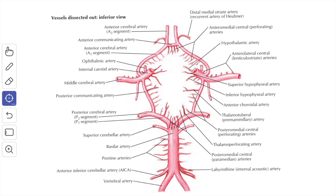The branches from the circle of Willis form the central branches — numerous, slender, thin-walled perforating branches which supply the centrally located parts of the cerebrum, namely the corpus striatum, internal capsule, etc. These are end arteries. The central arteries arise in the region of the circle of Willis and are arranged into four groups. The anteromedial group arises from the anterior communicating artery and the anterior cerebral arteries, entering the anterior perforated substance to supply the anterior limb of the internal capsule, the corpus striatum, and the anterior hypothalamus.